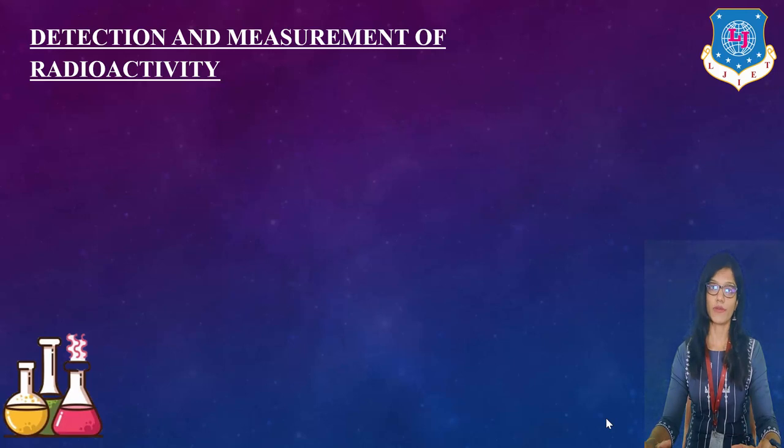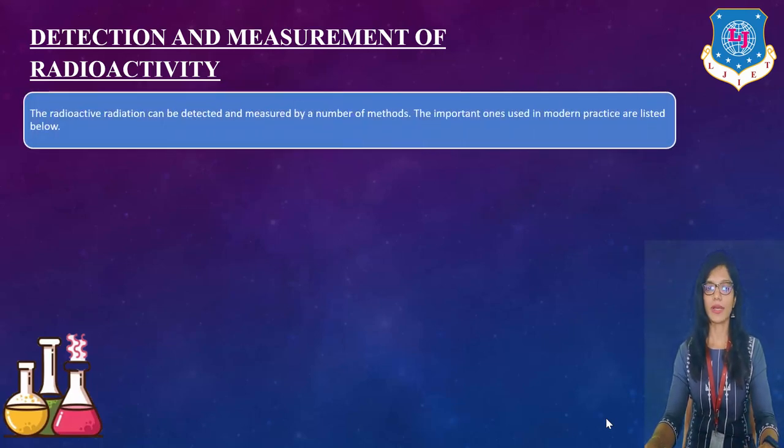Now for that we can use one another one. That is detection and measurement of radioactivity. If we can detect that easily, then we can actually dispose it of it. We can capture it. So the capturing is another one. So the radioactive radiation can be detected and measured by a number of methods.